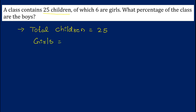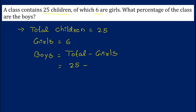The total number of boys equals total children minus total number of girls. Since total children are 25 and girls are 6, we calculate 25 minus 6, which gives 19. So the total number of boys in the class is 19.